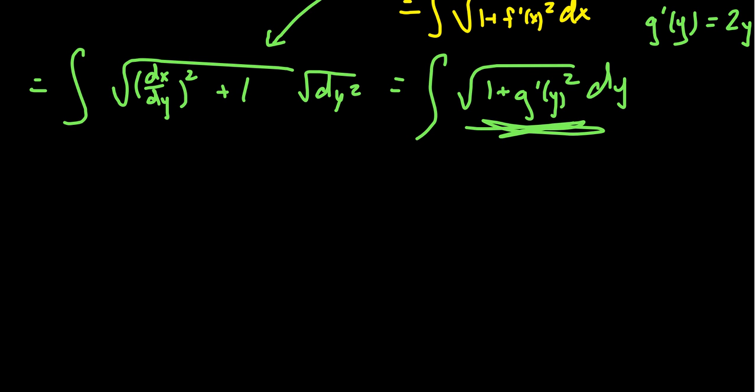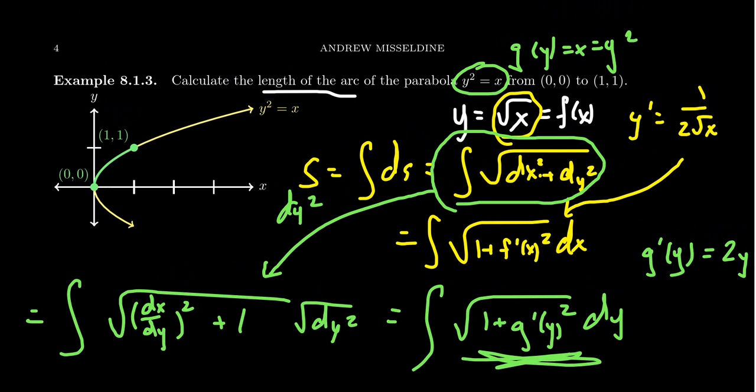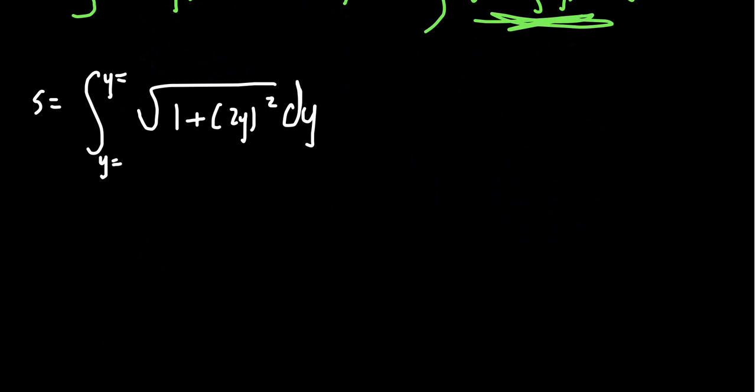So our arc length is going to look like the integral of the square root of 1 plus 2y squared dy. Our boundaries are going to be y coordinates. Going back up to the original picture, y will range from y equals 0 to y equals 1. Good news here. If you actually wrote the x coordinates, you would be right for the wrong reasons. That's still correct. So we're going to integrate from 0 to 1 right here. So rewriting this integral, because we can square the 2y, integrate from 0 to 1, the square root of 1 plus 4y squared dy.